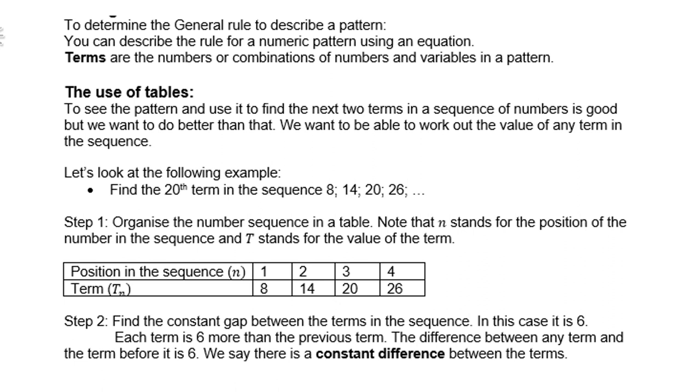Step 1: Organize the number sequence in a table. Note that N stands for the position of the term in the sequence and T stands for the value of the term. So position of the terms is term 1, term 2, term 3, term 4. Term 1 is 8, term 2 is 14, term 3 is 20, term 4 is 26.